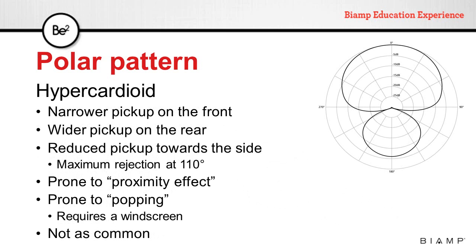If we narrow the pattern a little bit more, we get to the hypercardioid polar pattern. As you can see, the back lobe increases in size as the front one gets narrower. In this pattern, the maximum rejection is at 110 degrees from the front. They are also prone to proximity effect and popping, but they are not as common as cardioid and supercardioid microphones these days.